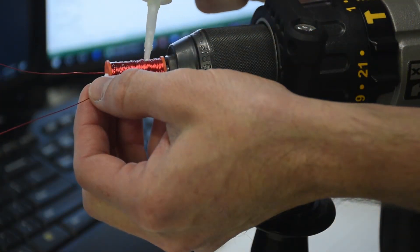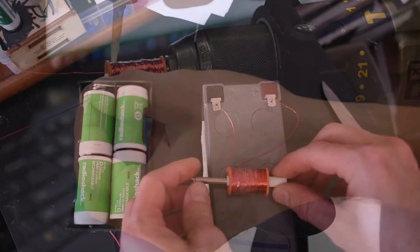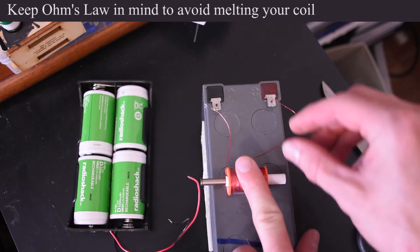Now a solenoid's power depends primarily on its current, so you need something that can source a lot of current, like a sealed lead acid battery that I'm testing here.